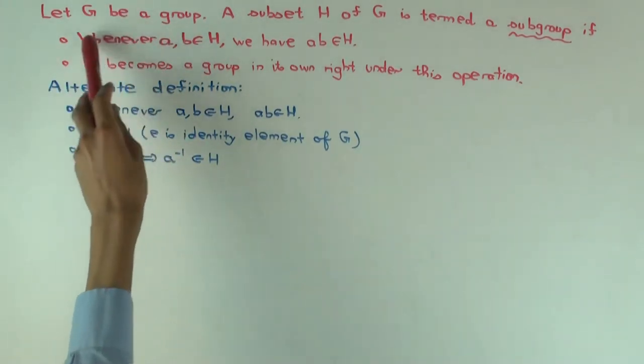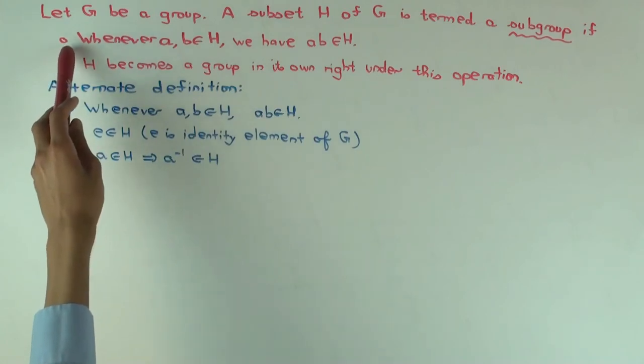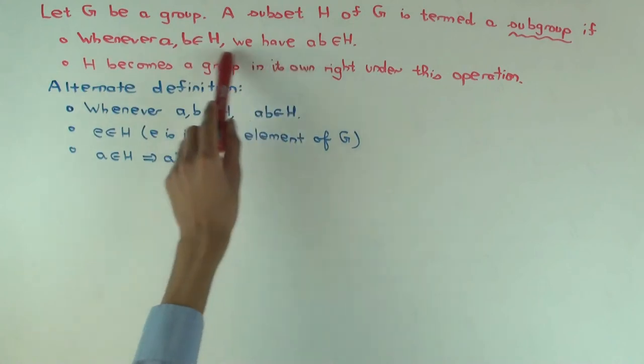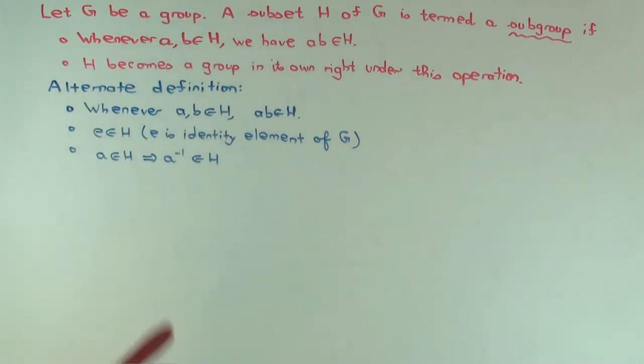But if you just have a subgroup under the red definition, the top definition, then you cannot be sure a priori, without proving something, that the identity and inverse operation in H are the same as those in G.